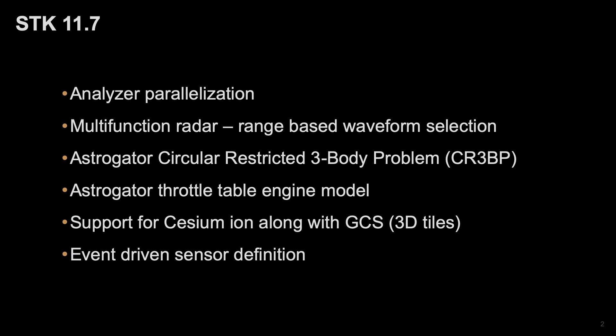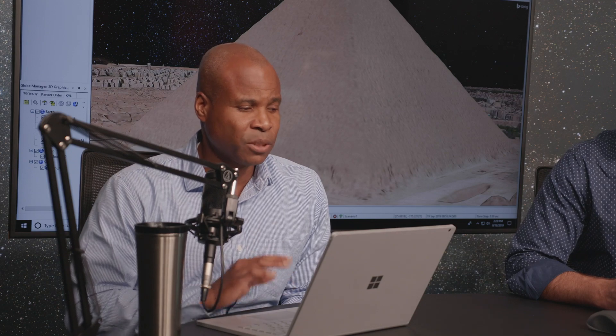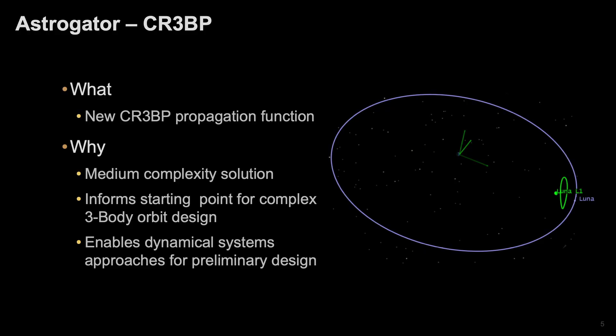The next item on the list is for Astrogator. There are multiple features added to Astrogator, but there are two primary ones we'll talk about. The first is the ability to do the circular-restricted three-body problem, commonly referred to as CR3BP.